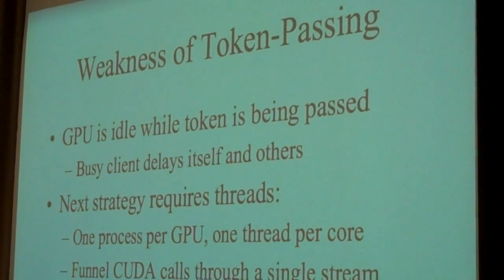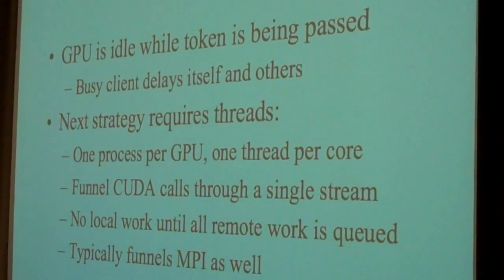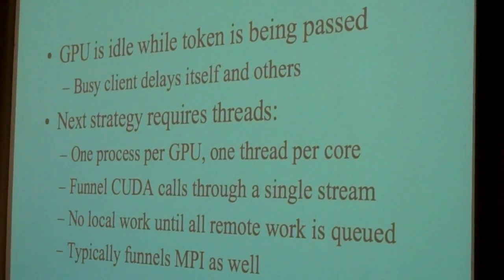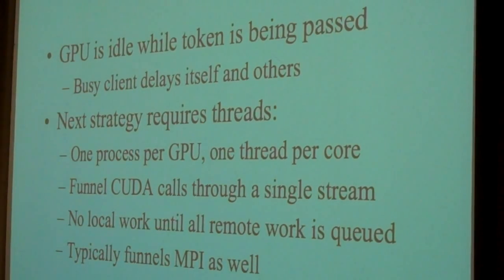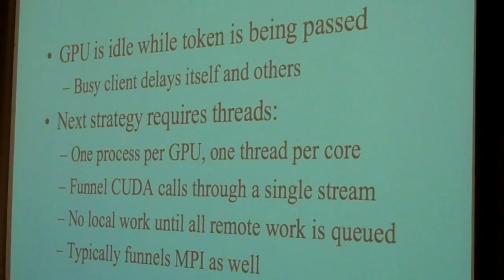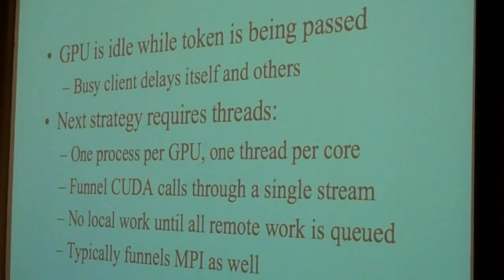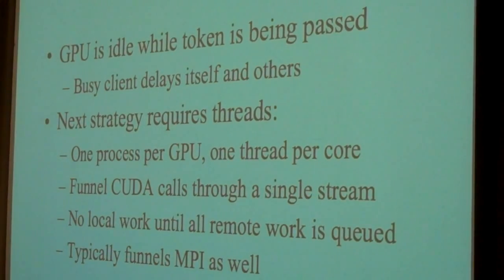What the ultimate solution is going to be is one process maximum per GPU. We could have two GPUs per process, but we'll probably split it up a bit. One GPU per process, run one thread per core, which NAMD is capable of. We're going to have to funnel all the CUDA calls through a single stream running on a single thread because the CUDA interface is not thread safe. You can't call the same interface from different threads.